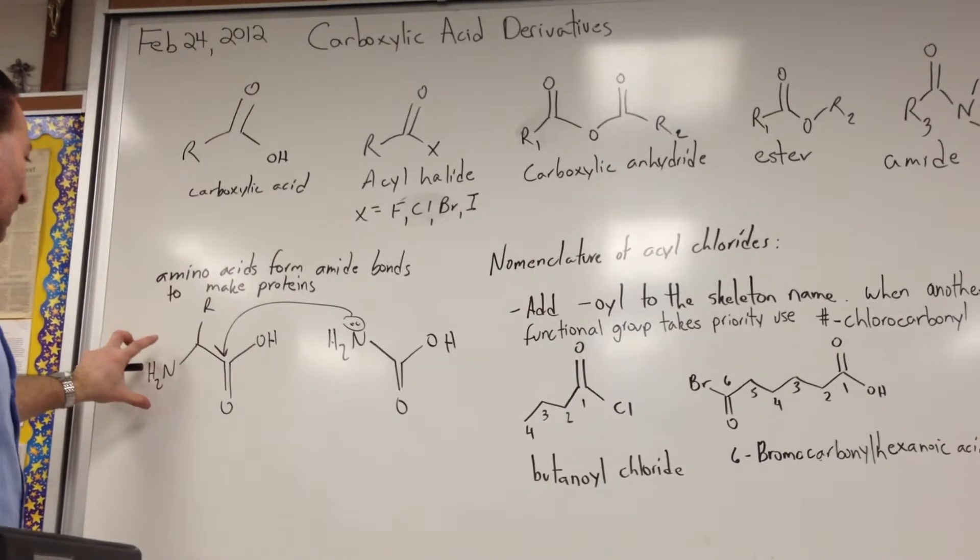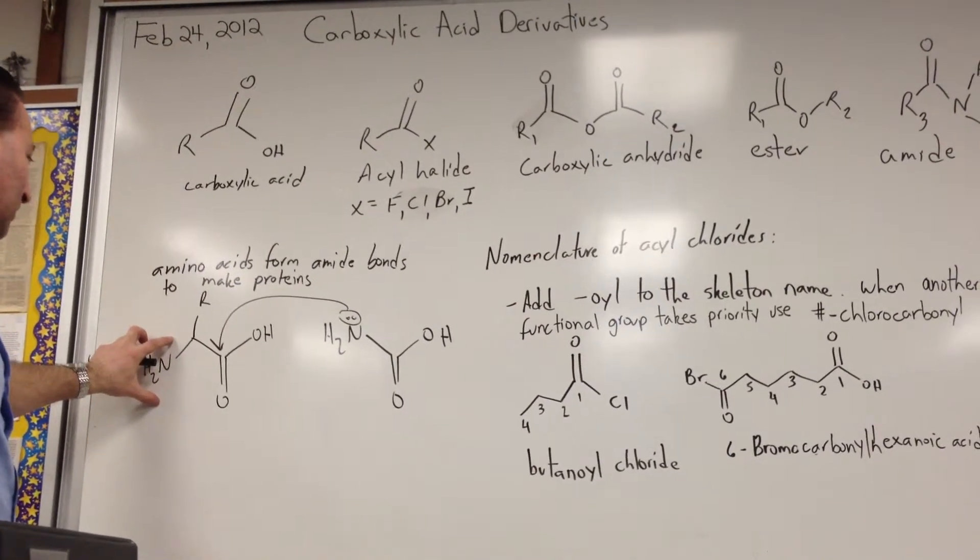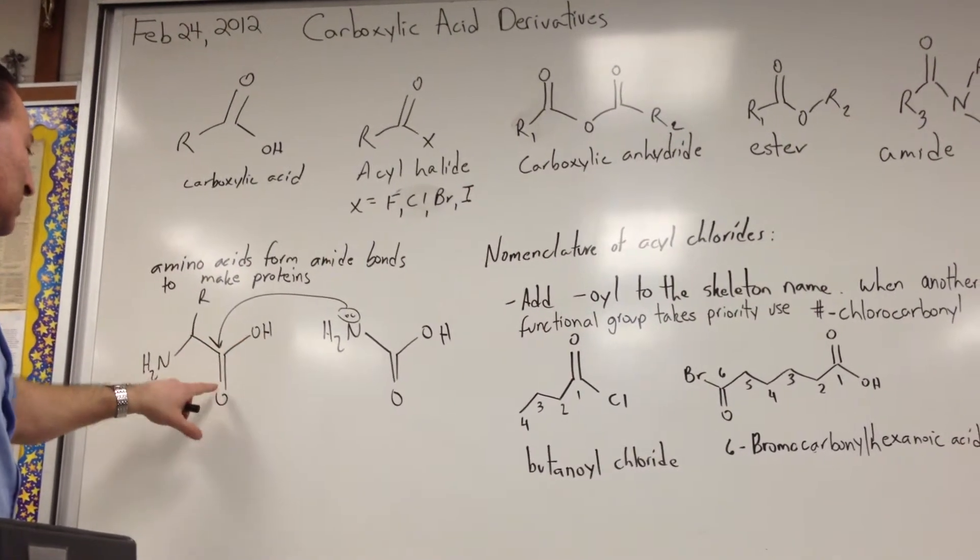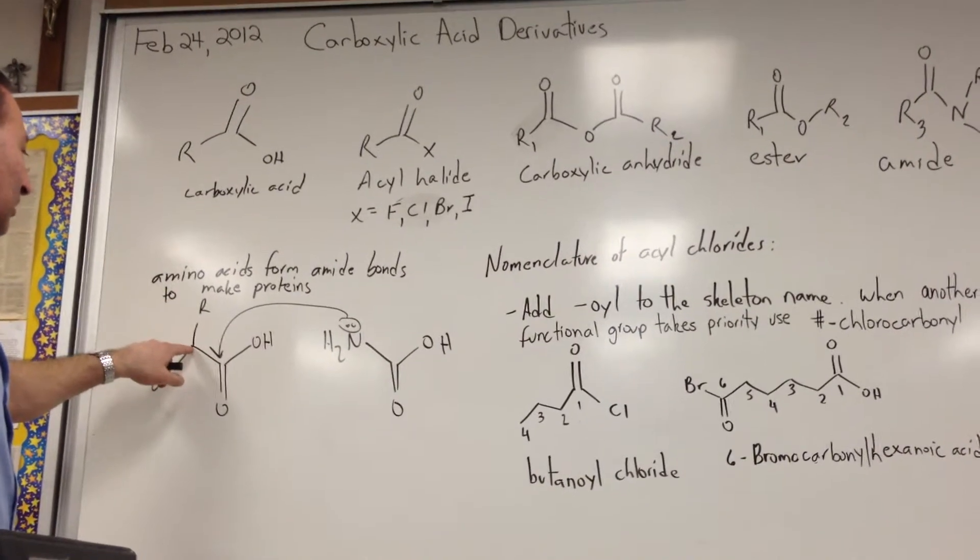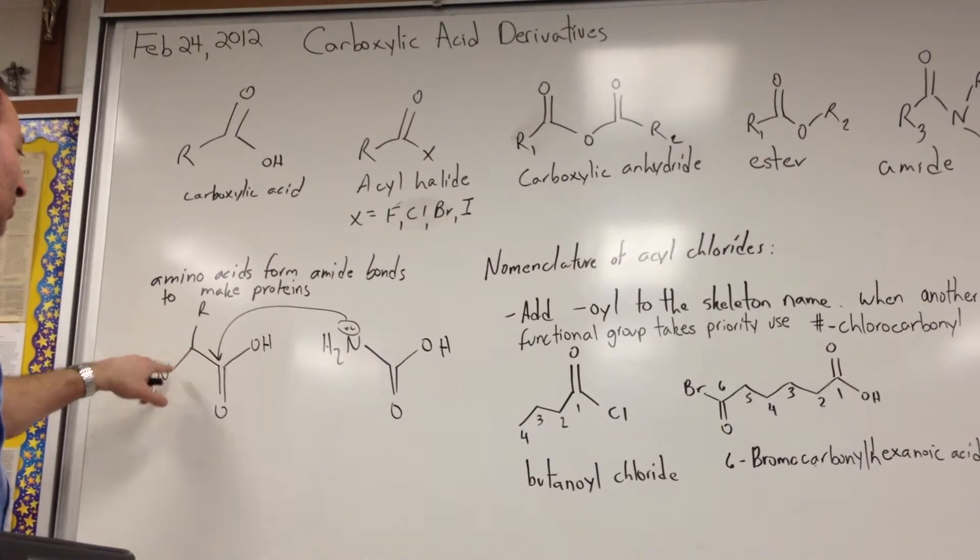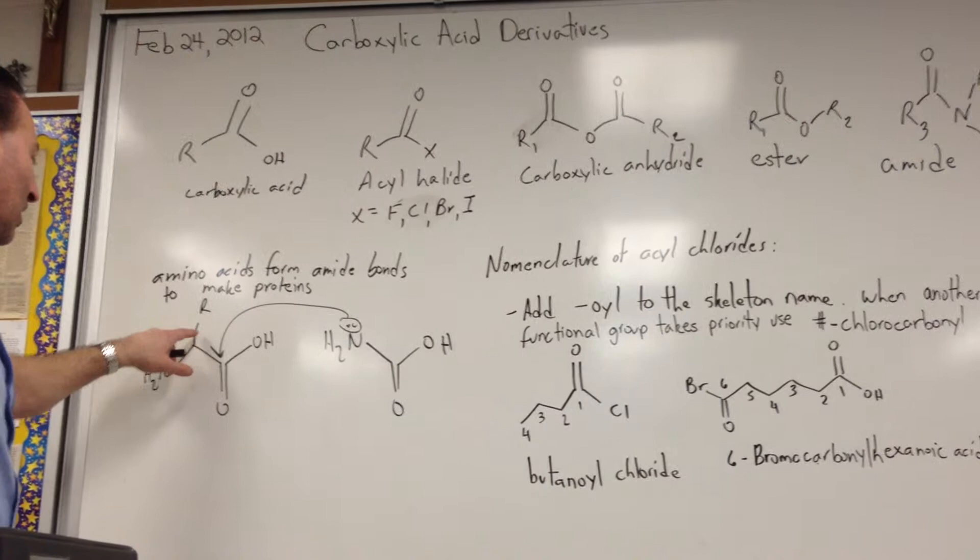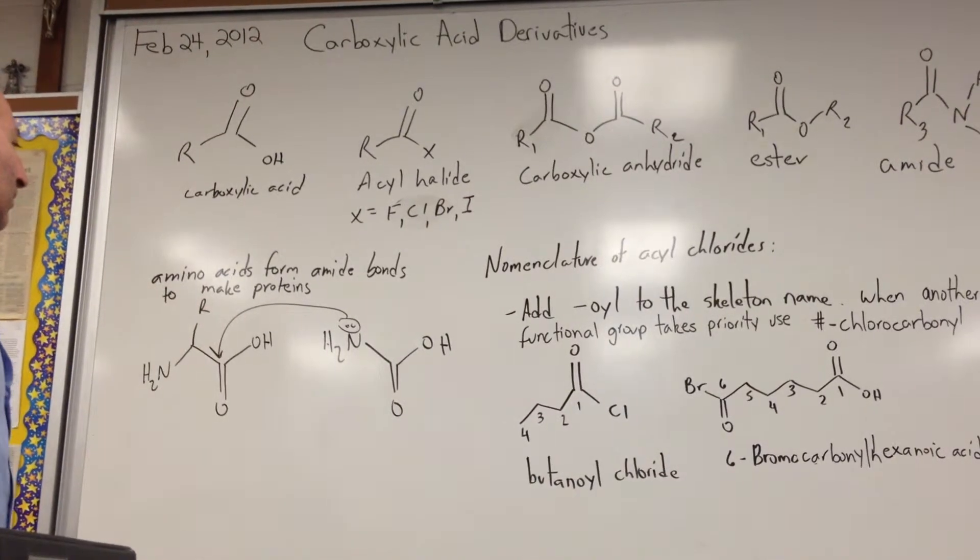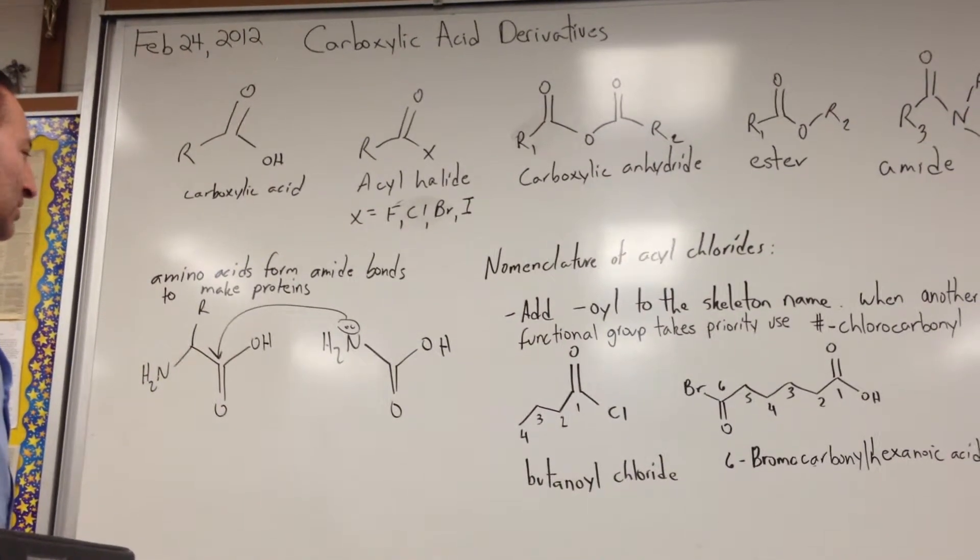All amino acids have an amino group and a carboxylic acid group and an R group in the middle. On the carbon that connects to the amino group and the carboxylic acid group, there's always an R group. There are about 21 different amino acids in the human body.